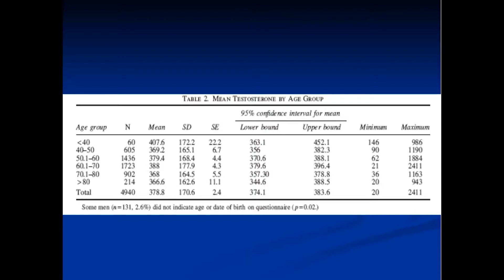Looking at testosterone level based on age group, you do see a drop, but it's not as dramatic as reported in the literature — the p-value was 0.02, not as significant as other associations. This more current data may reflect what's going on in our population, which has more to do with obesity and diabetes. The point is: you can never rely solely on a patient's age. A 50-year-old who's 30 pounds overweight and doesn't exercise is at greater risk of low T than a fit 80-year-old.